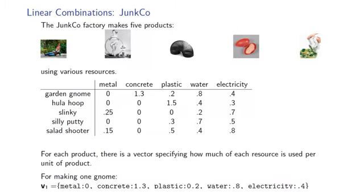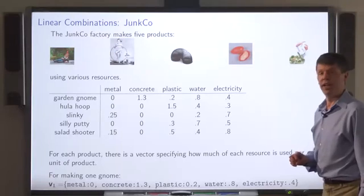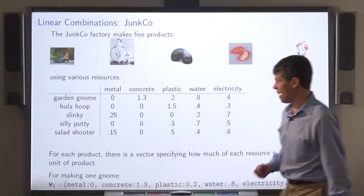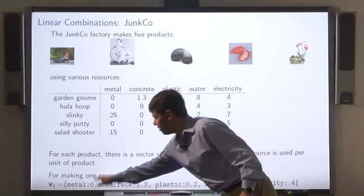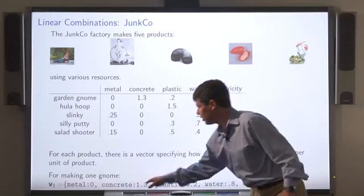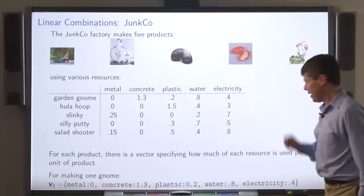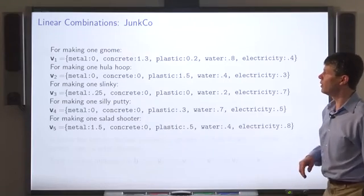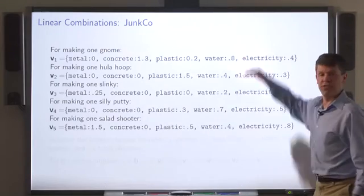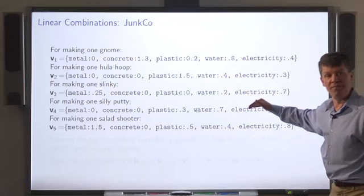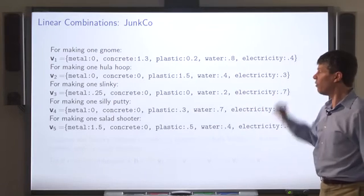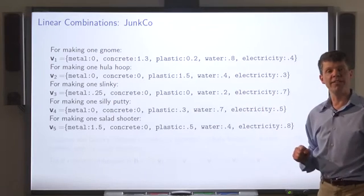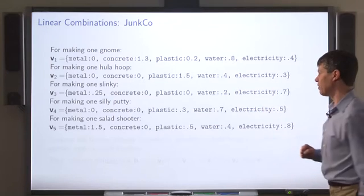For example, for making a garden gnome, the vector maps metal to 0, concrete to 1.3, and so on. So there's a vector like this for each of the products that Junk Co makes.